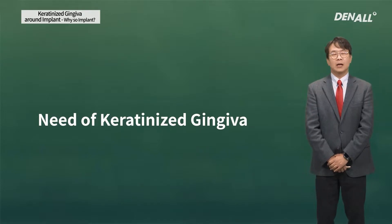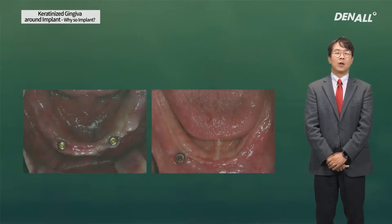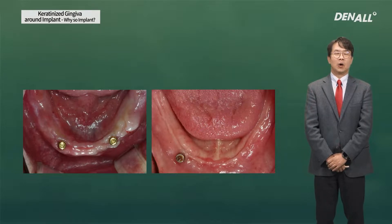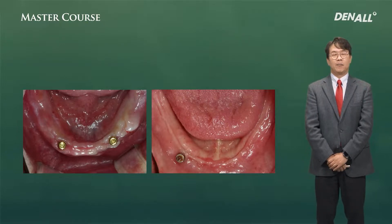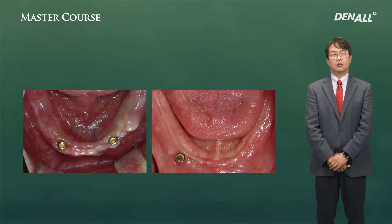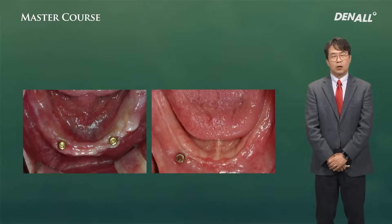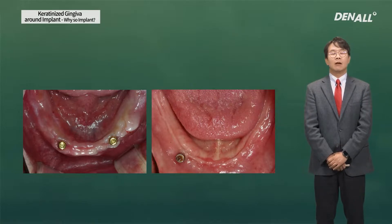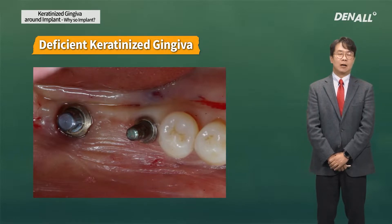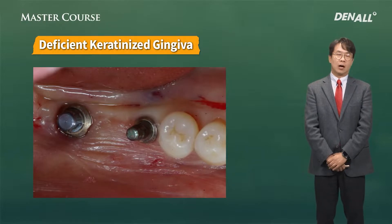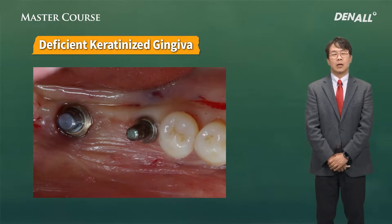First, the need for keratinized gingiva. Looking at clinical photos of two patients, both of them were overdentures. The left patient has sufficient keratinized gingiva around the abutments, and the right patient does not have the gingiva. The patient without sufficient keratinized gingiva had implants removed due to peri-implantitis.